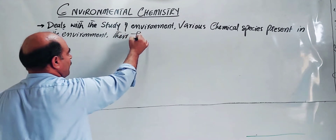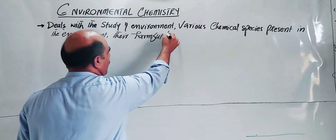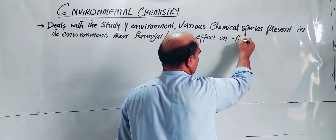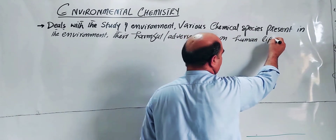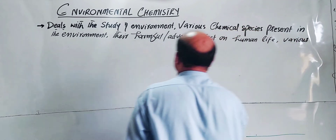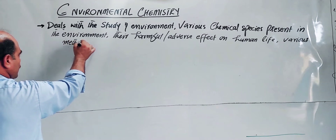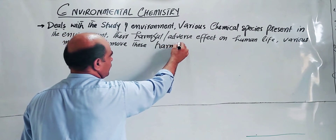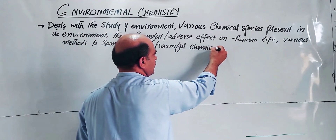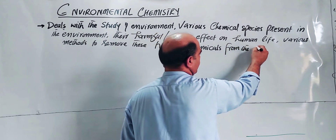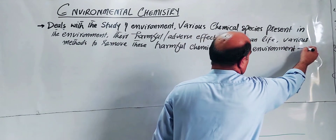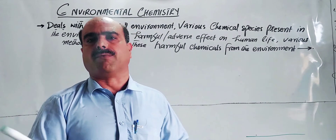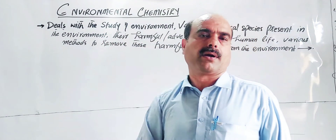Environmental chemistry also deals with the harmful effects on human life, and the various methods to remove these hazardous chemicals from the environment. In summary, environmental chemistry is the branch of chemistry which deals with the study of the environment; that branch is called environmental chemistry.